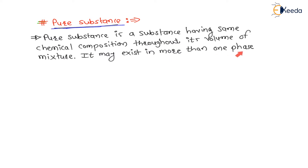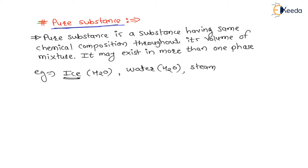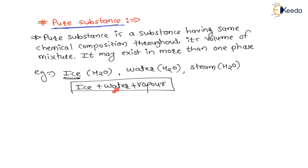Pure substance may exist in more than one phase. For example, ice is a pure substance with chemical formula H2O. Water is also a pure substance with formula H2O. Water vapor (steam) is also a pure substance with formula H2O. Therefore, a mixture of ice plus water plus water vapor also qualifies as a pure substance, since the chemical composition is the same throughout. The mixture may exist in more than one phase.